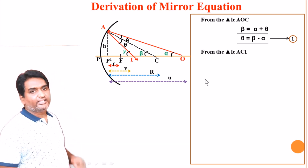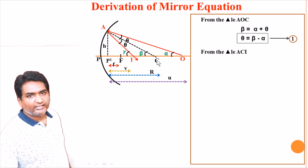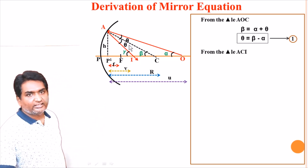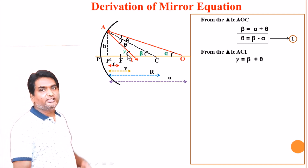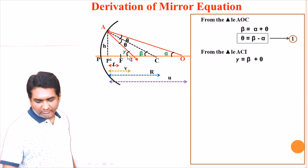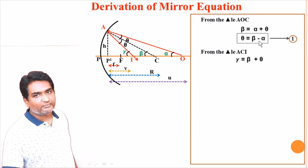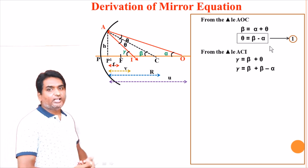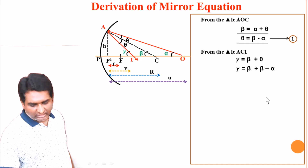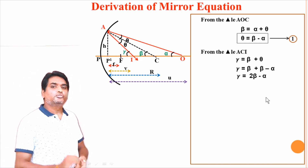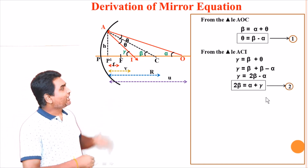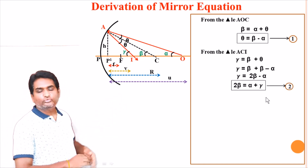Now let us take the second triangle — A-C-I. The internal angles are theta and beta, and the external angle is gamma. So gamma equals beta plus theta. Substituting theta equals beta minus alpha from equation 1, gamma equals beta plus beta minus alpha, giving gamma equals 2-beta minus alpha, or 2-beta equals alpha plus gamma. Let us name this equation 2.